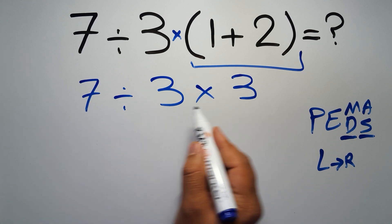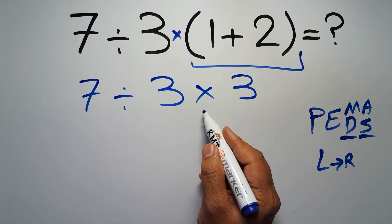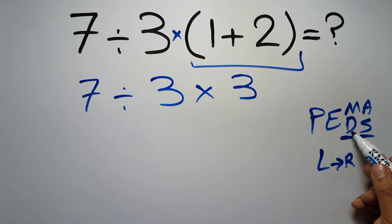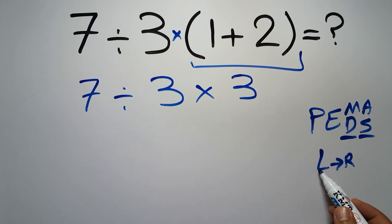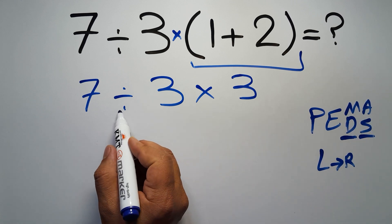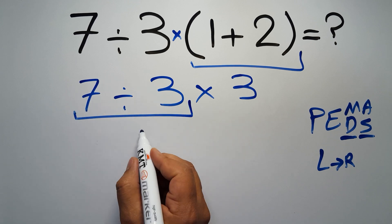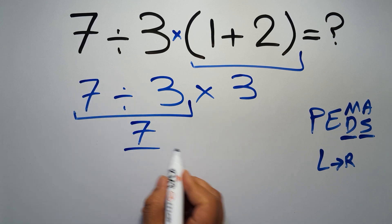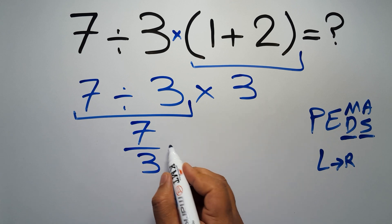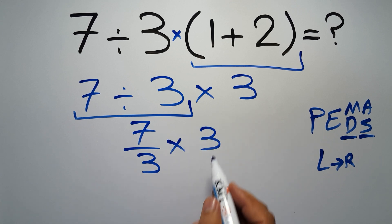Now we have one division and one multiplication. As I said, multiplication and division have equal priority and we have to work from left to right, so here first we have to do this division, 7 divided by 3. Now we can easily cancel this 3 and this 3.